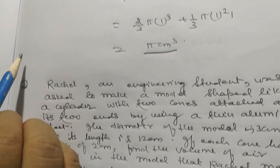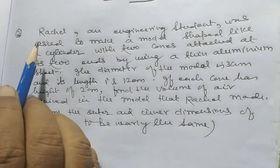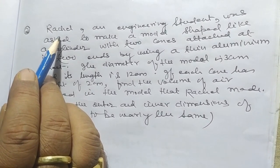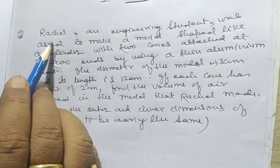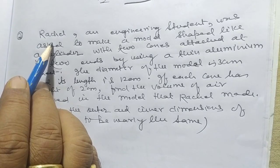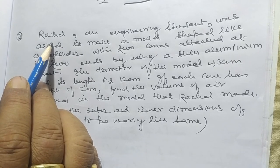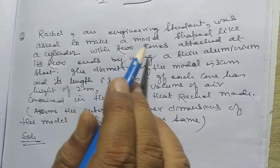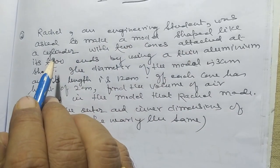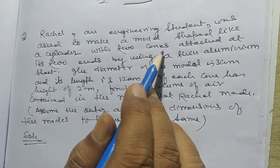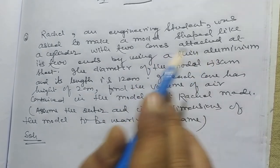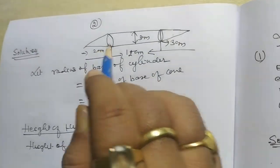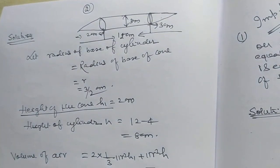This question is very important for the purpose of multiple types of questions. Now I want to discuss the second problem. What is given in the second problem? Rachel, an engineering student, was asked to make a model shaped like a cylinder with two cones attached at its two ends.